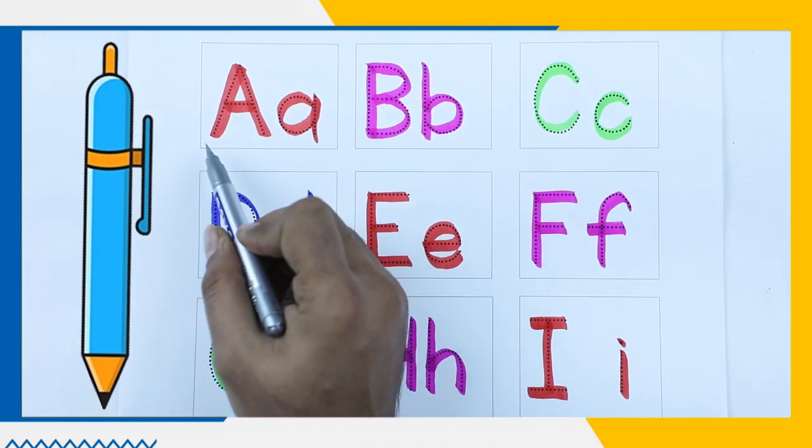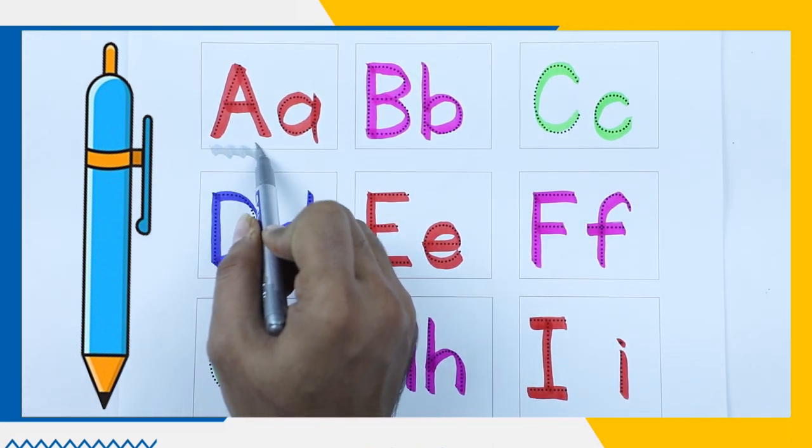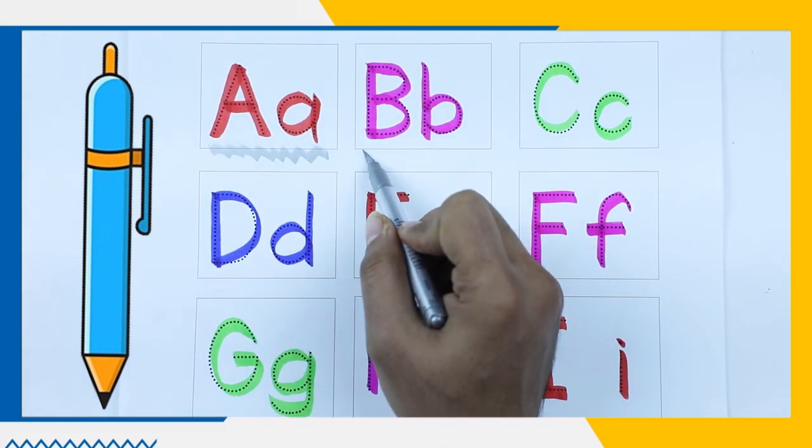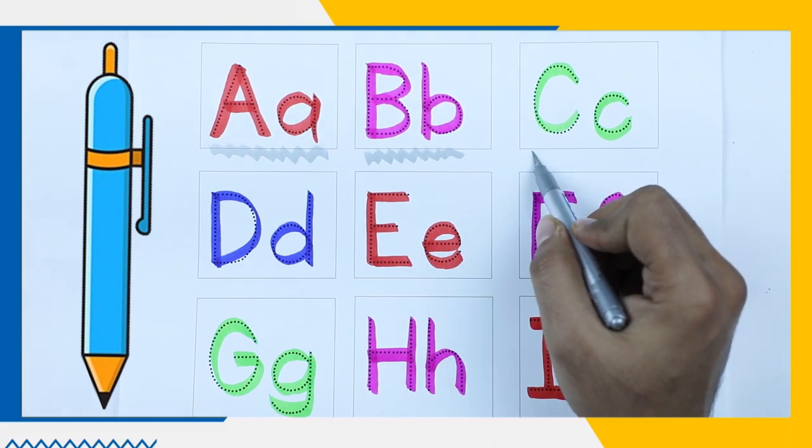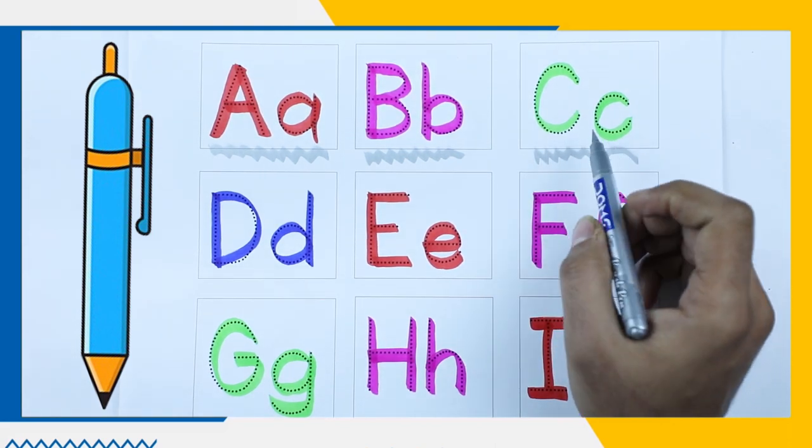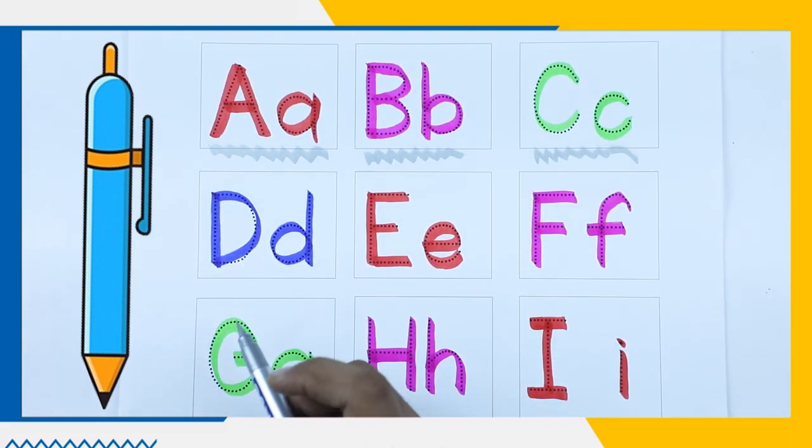It's A, capital A and small a with red color. B, B with pink color. C, C for cat, C with green color.